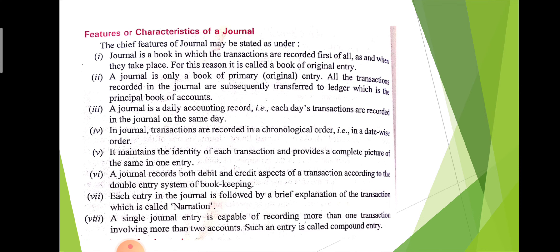Features or characteristics of journal: Journal is a book in which transactions are recorded first of all when they take place, which is why it is called book of original entry. It is the only book of primary entry — all transactions are recorded in the journal and after that they are posted to the ledger. A journal is a daily accounting record, meaning transactions are recorded on the same day, in chronological, that is date-wise, order.